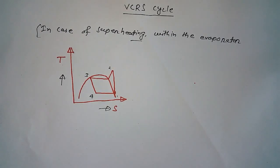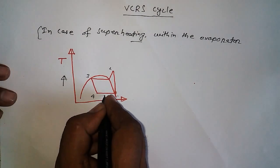So let's move to another step. What will happen in case of superheating within the evaporator? In case of the VCRS cycle, we have an evaporator here.